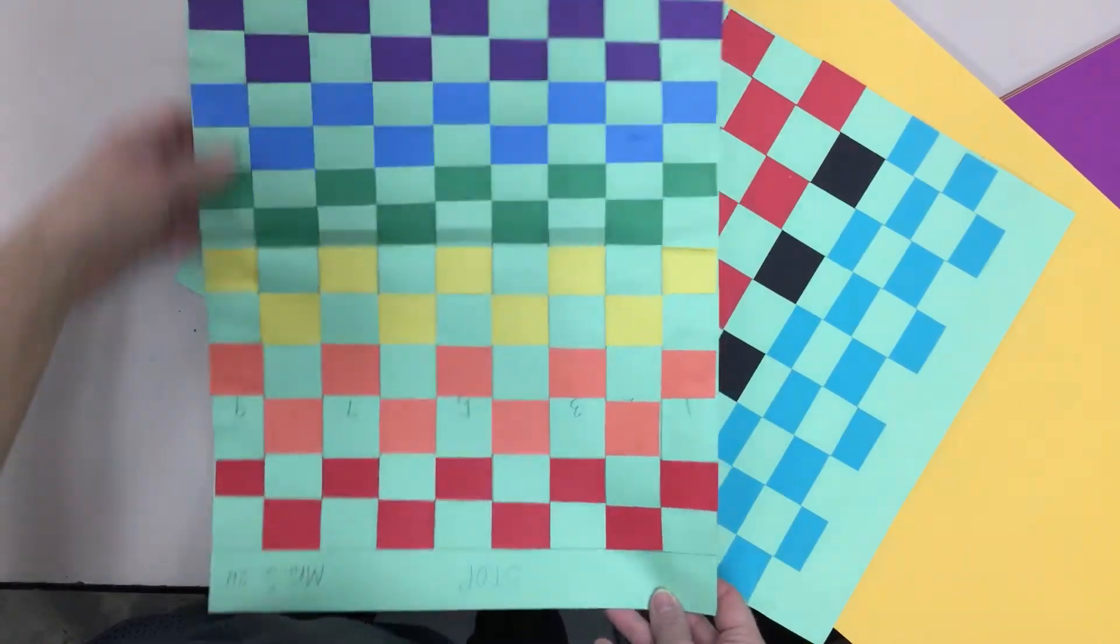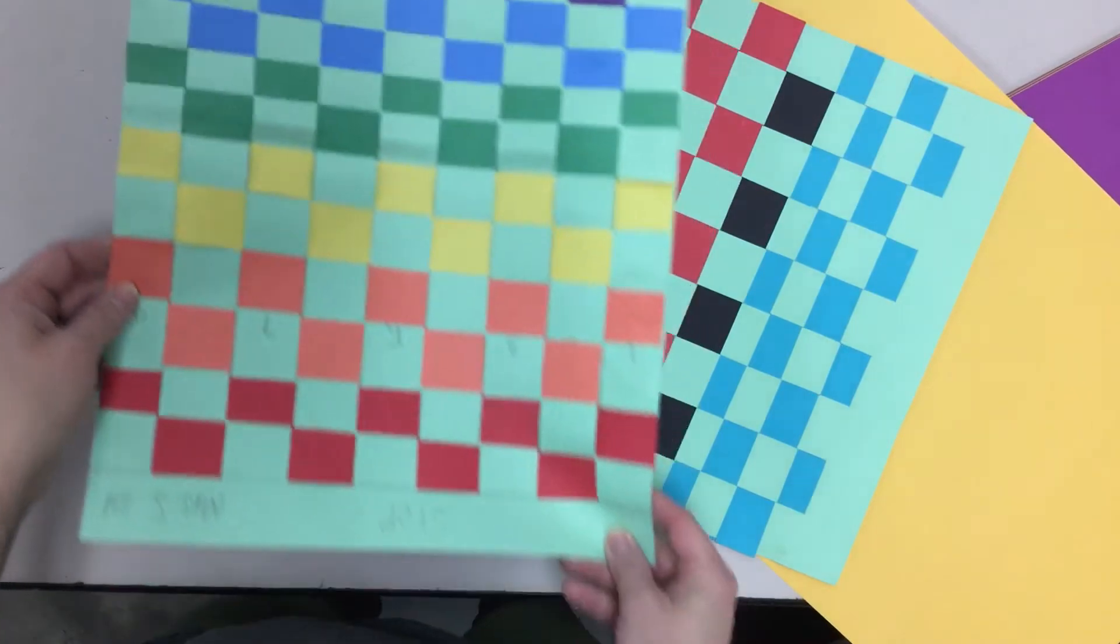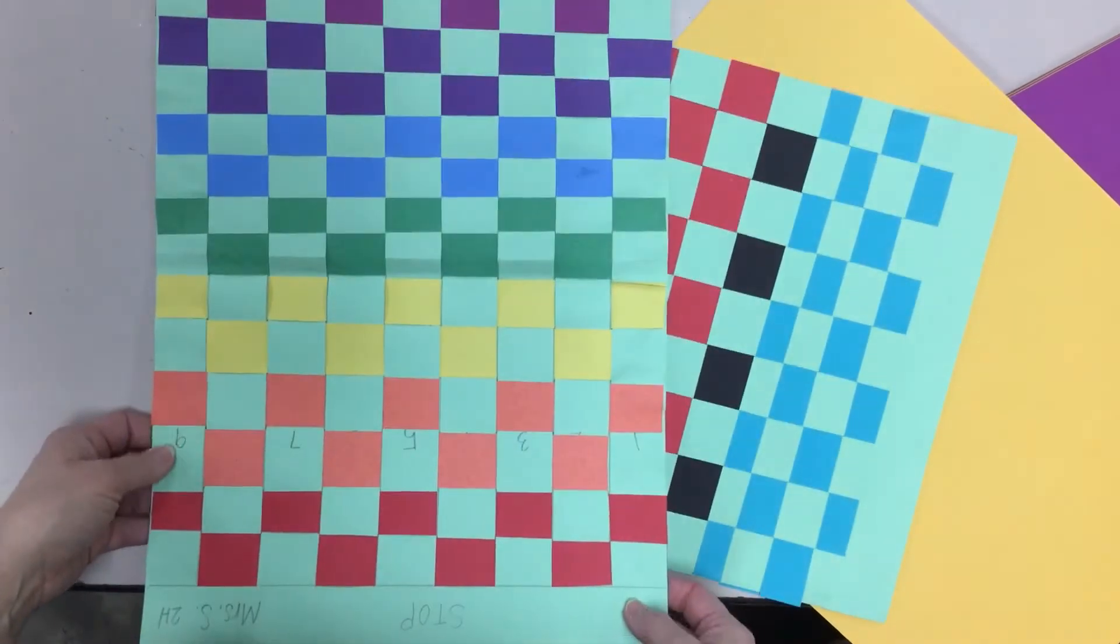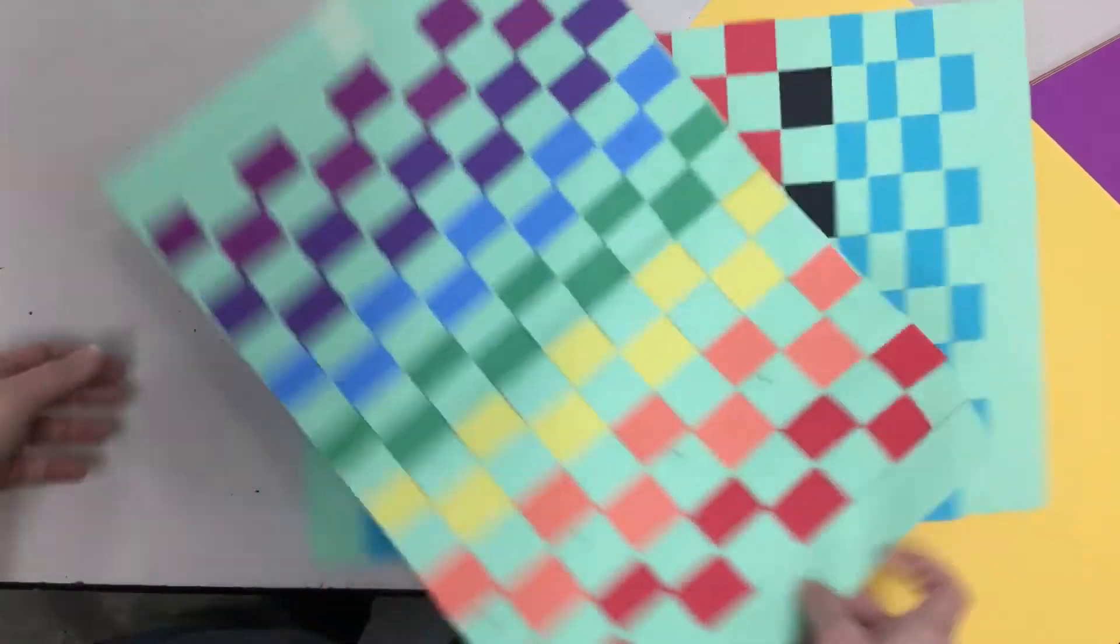And this is what your paper weaving project might look like at the end of the project. It's not going to be what it looks like today, but we're going to start by creating this template which we'll weave with.